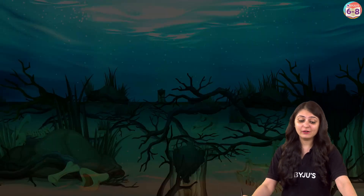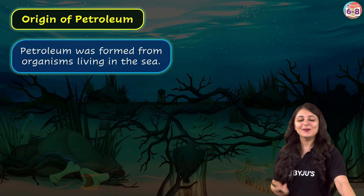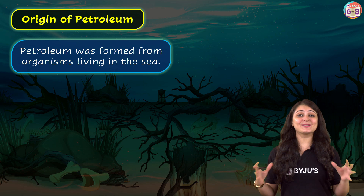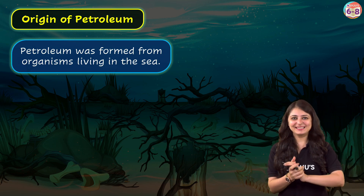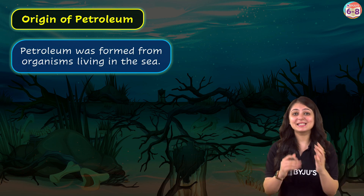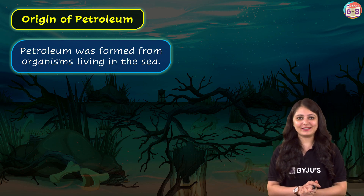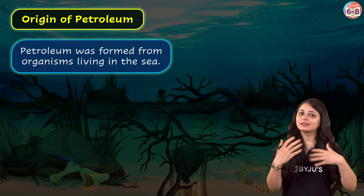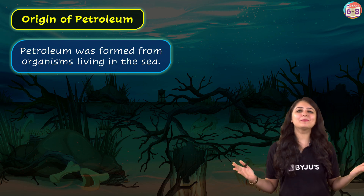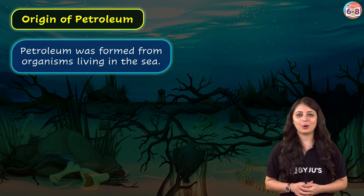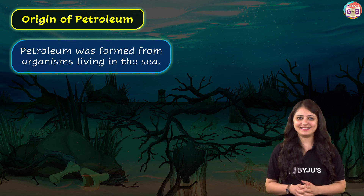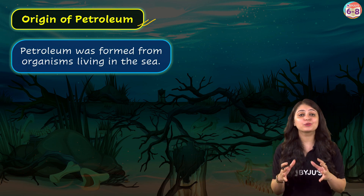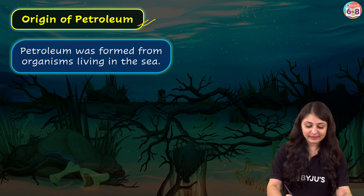What's the origin of petroleum? Imagine you're taking a trip back in time, when dinosaurs and other ancient creatures lived millions of years ago in oceans, lakes, and forests. When these creatures died, their remains settled at the bottom of water, covered by sediments. Over time, more and more layers of sediment piled up, creating lots of pressure and heat, and finally it all turned into petroleum.